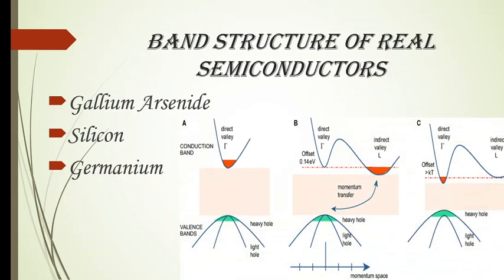When we study about band diagrams or band structures, we can easily distinguish whether the semiconductor is a direct band gap semiconductor or an indirect band gap semiconductor. Direct band gap semiconductor means, in the diagram, the top of the valence band and the bottom of the conduction band are one above the other — the k value remains the same for both the conduction band and the valence band.